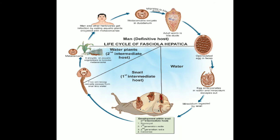After entering the peritoneal cavity, the parasites penetrate Glisson's capsule, traverse the liver parenchyma, and reach the biliary passages where they mature into adult worms in about three to four months. To summarize the hosts: first intermediate host is the snail, second intermediate host is the aquatic plant, and the definitive host is sheep, goat, cattle, or man.